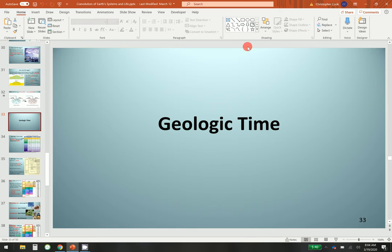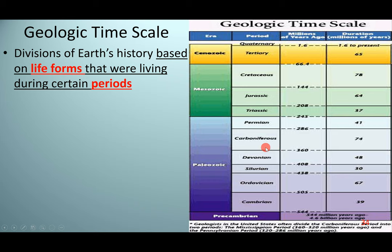Let's talk about the geologic time scale — it's a division of Earth's history based on life forms that were living during certain periods. For example, the dinosaurs lived during a certain period, and once they went extinct, different time periods evolved. We have our Cenozoic era, which we're currently in, our Mesozoic, our Paleozoic, and then our Precambrian. All types of different life forms lived during these eras.